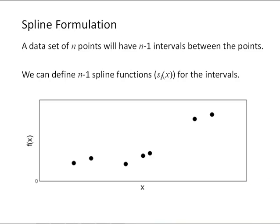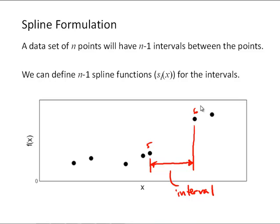So let's look at how we can formulate a spline. If we have a set of n data points, we'll have n-1 intervals between the points. So here, say, seven data points — we would have six intervals. This particular interval shown is between the fifth and the sixth data points, giving us six intervals total for seven data points.